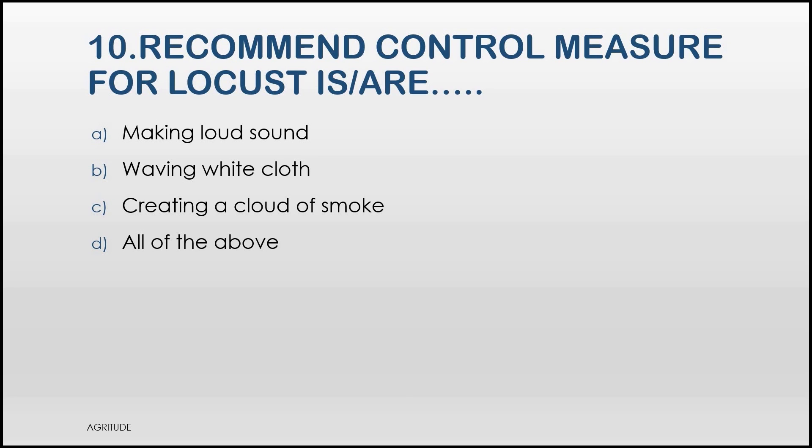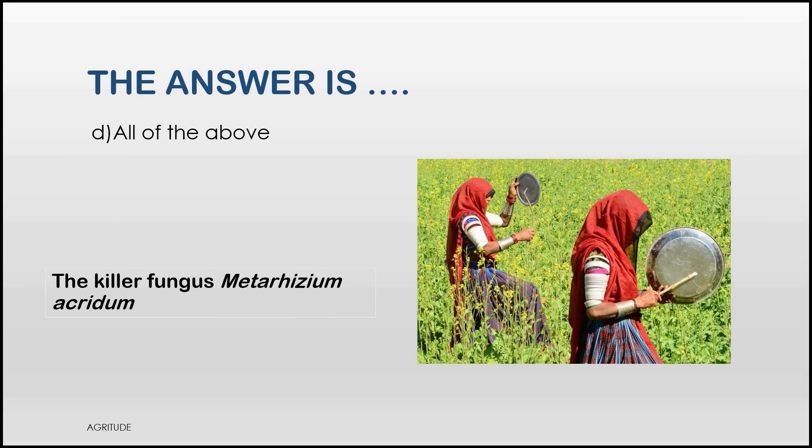We have come to the last question of the video. Recommended control measure for locusts is A. Making loud sound, B. Waving white cloth, C. Creating a cloud of smoke, D. All of the above. The answer is All of the above.